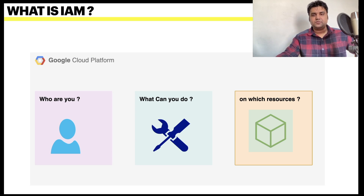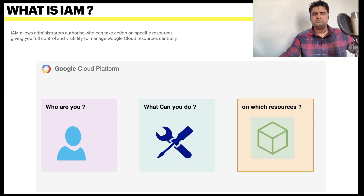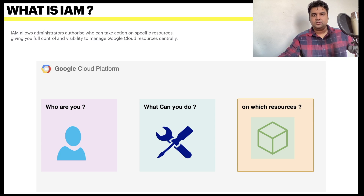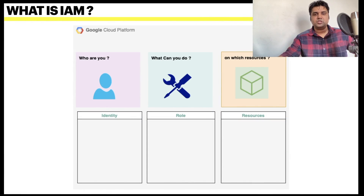GCP IAM is all about three basic questions. First is: who are you? Second: what can you do? And third: on which resources? IAM allows administrators to authorize and take action on specific resources, giving you full control and visibility to manage Google Cloud resources centrally.